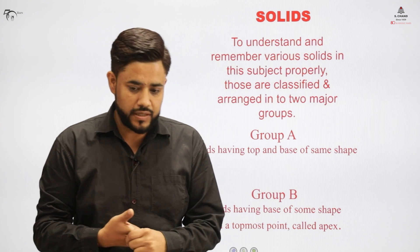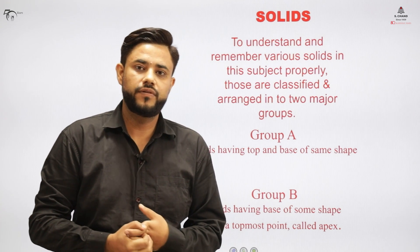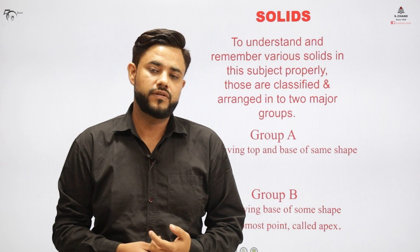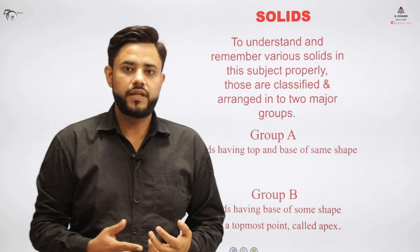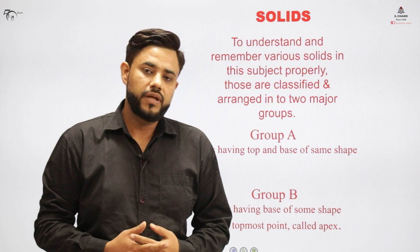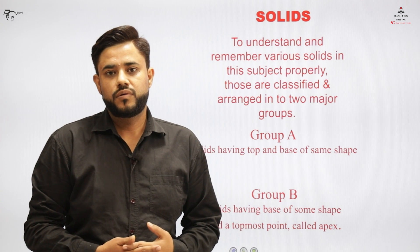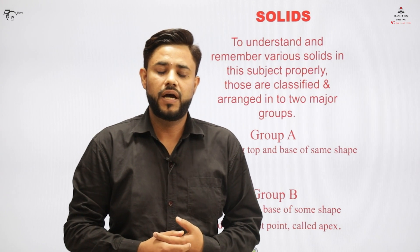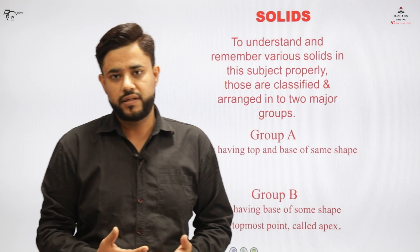Let us understand what a solid is and how it is different from a plane that we covered in the previous video. A solid is any object that has three dimensions, namely length, breadth, and height. That 3D object is called a solid, and we group solids into two categories.